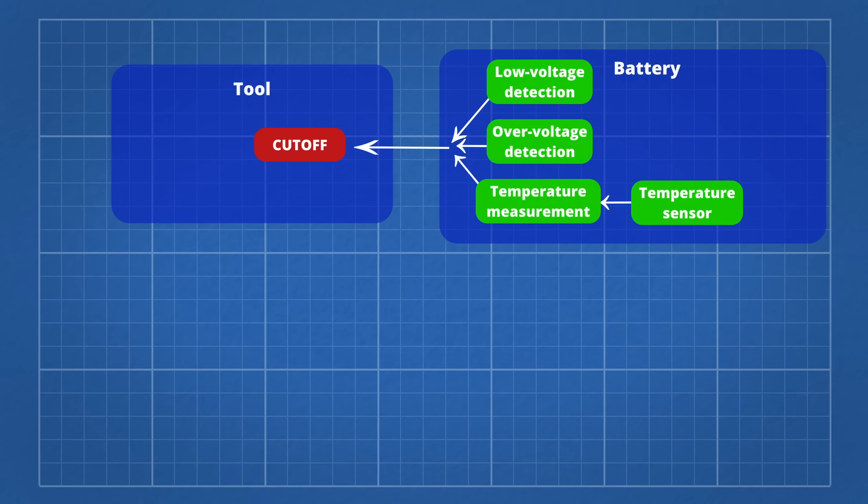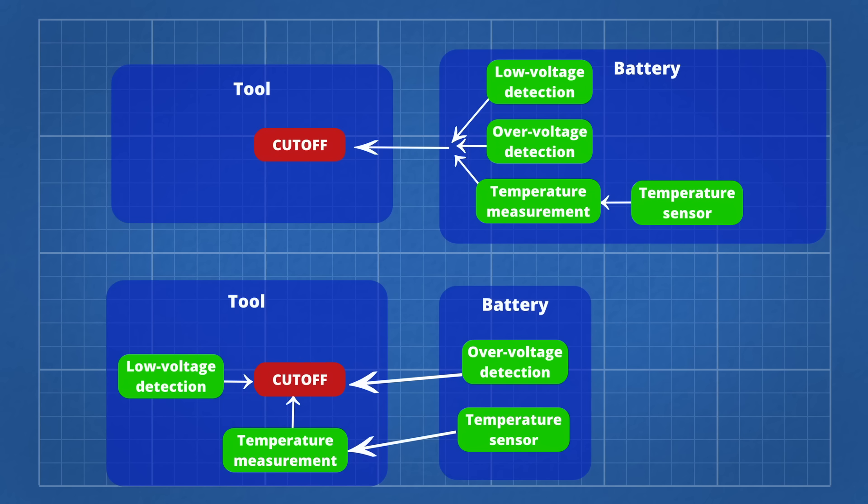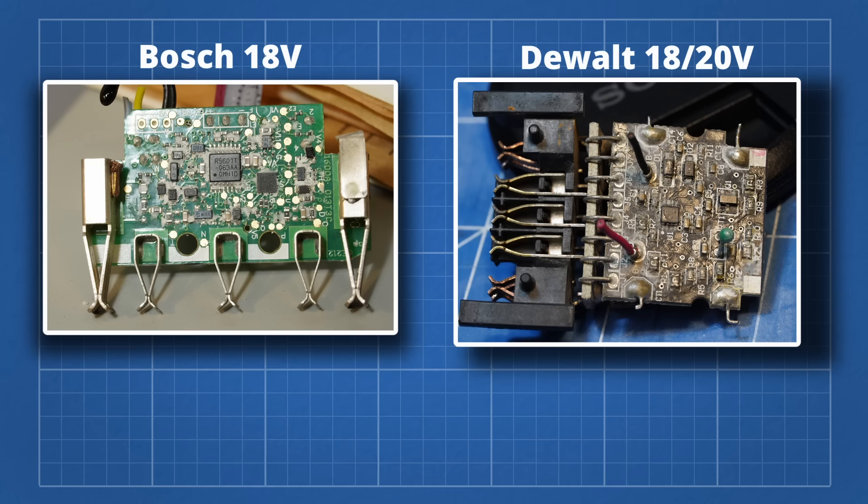Milwaukee and Makita are quite similar, in that all the detection is inside the battery, but the tool does the cutoff. DeWalt and Bosch are somewhat similar and are mostly in the tool, with overvoltage protection in the battery. DeWalt, however, manages to do everything that Bosch does, but with a much simpler circuit.